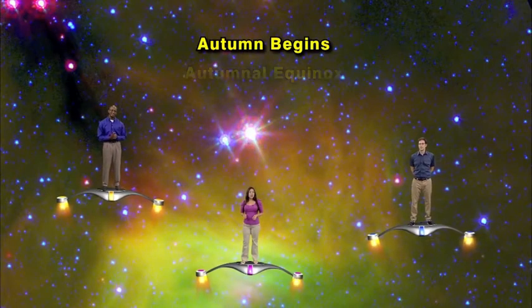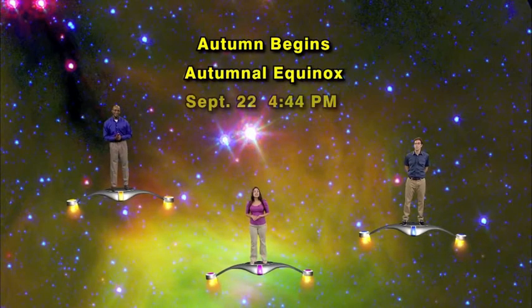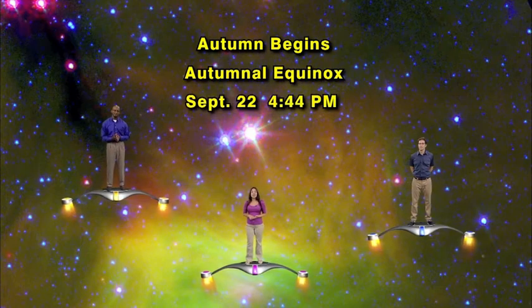Autumn officially begins at the autumnal equinox, Sunday, September 22nd at 4:44 PM Eastern Time.